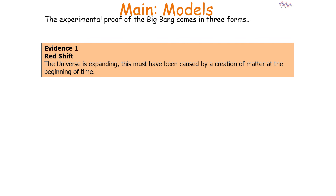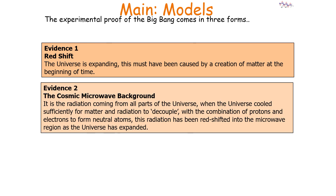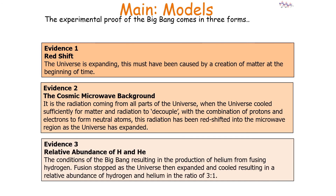Our experimental proof of the Big Bang comes in three forms. Evidence 1: Redshift — the universe is expanding, which must have been caused by the creation of matter at the beginning of time. Evidence 2: The cosmic microwave background — radiation coming from all parts of the universe, released when matter and radiation decoupled as protons and electrons formed neutral atoms, and redshifted into the microwave region as our universe expanded. Evidence 3: The relative abundance of hydrogen and helium — the conditions of the Big Bang resulted in helium being fused from hydrogen, with fusion stopping as the universe expanded and cooled, resulting in a hydrogen to helium ratio of 3 to 1.